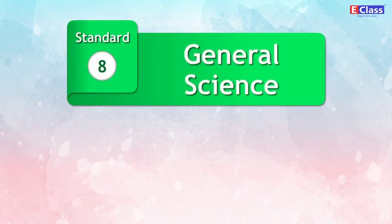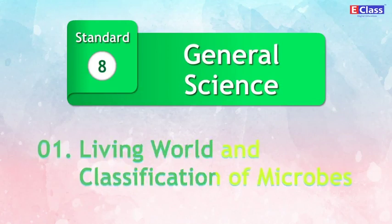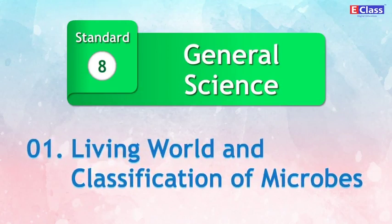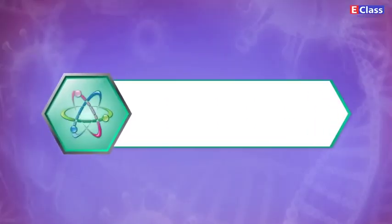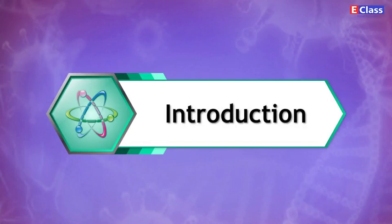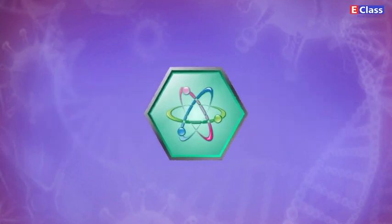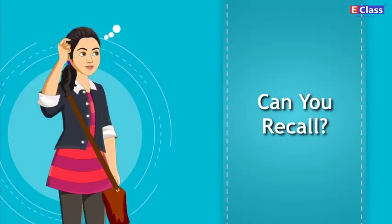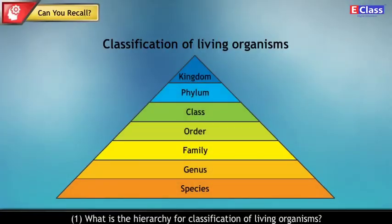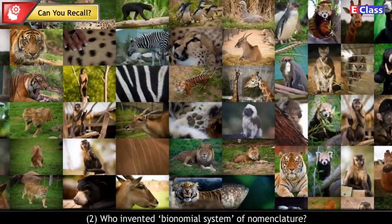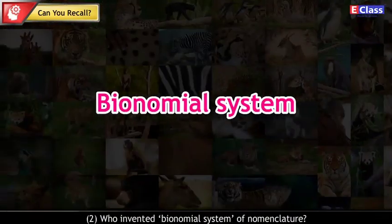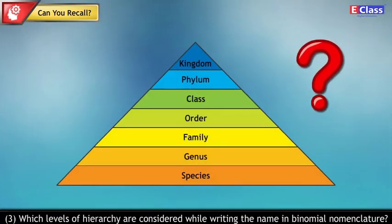Standard 8, General Science, Chapter No. 1: Living World and Classification of Microbes. Introduction. Can you recall: What is the hierarchy for classification of living organisms? Who invented the Binomial System of Nomenclature? Which levels of hierarchy are considered while writing the name in Binomial Nomenclature?